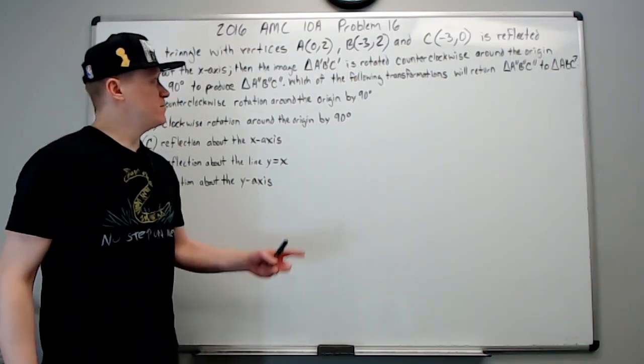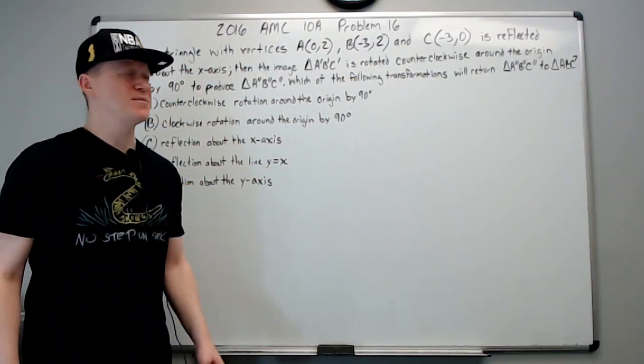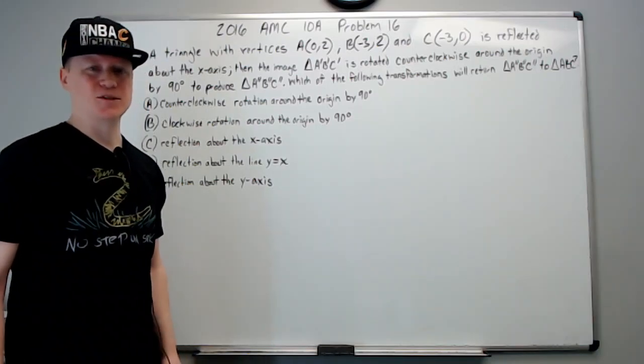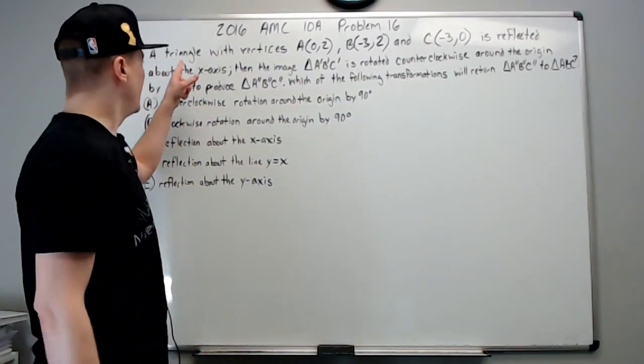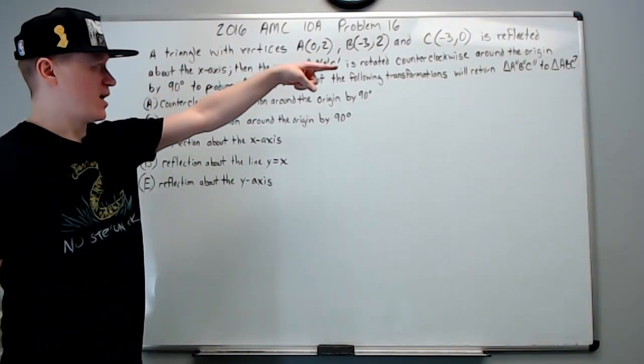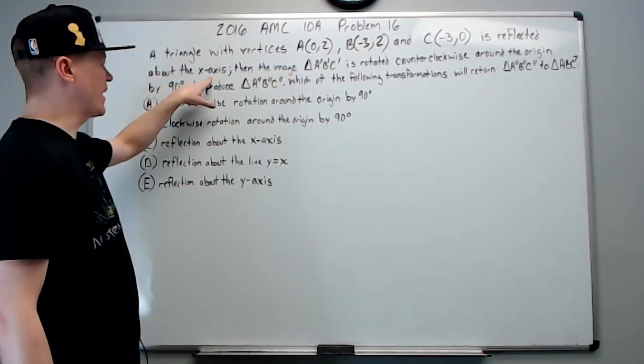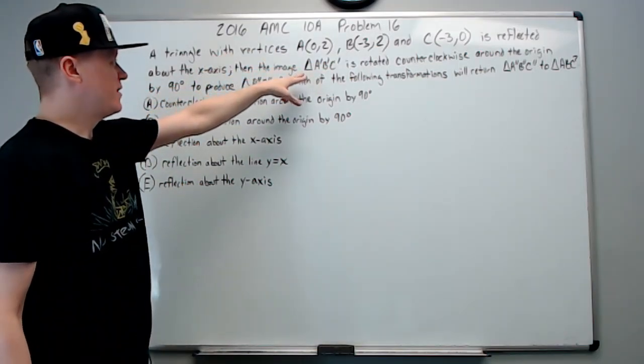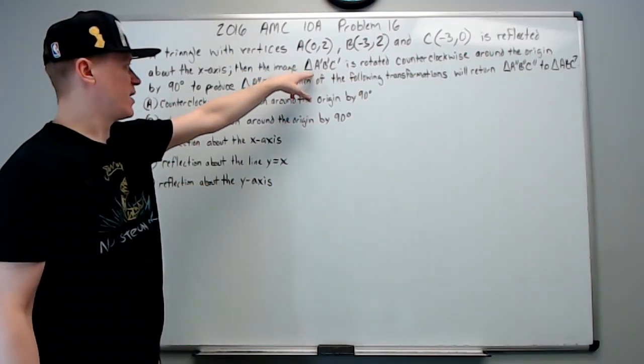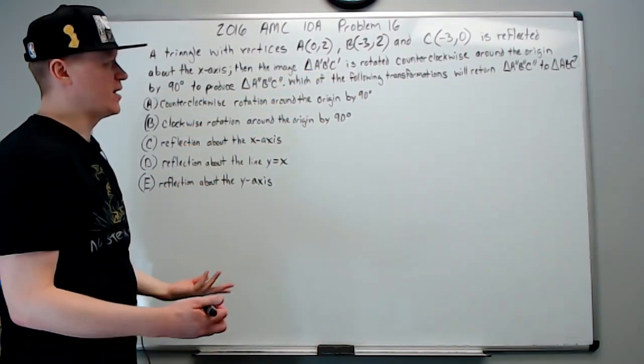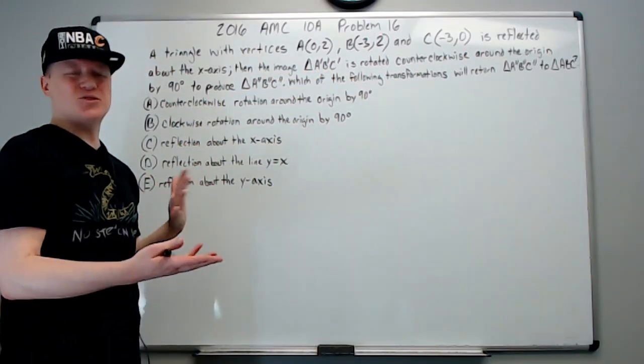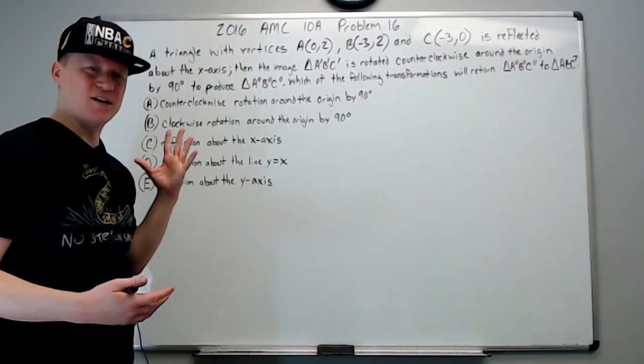Okay, the next set of five problems on the 2016 AMC 10A. Problem number 16, let's get started. A triangle with vertices is reflected about the x-axis, and then the image triangle A prime B prime C prime is rotated. At this point there's too much happening to really remember in your head what's occurring.